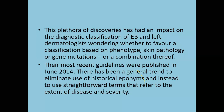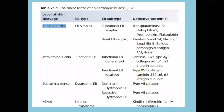The plethora of discoveries had an impact on the diagnostic classification of EB, leaving dermatologists wondering whether to favor a classification based on phenotype, skin pathology, gene mutation, or a combination thereof. The most recent guidelines were published in 2014, and there has been a general trend to eliminate the use of historical eponyms and instead use straightforward terms referring to the extent of disease and severity. Now the classification is simpler and more descriptive of the type of EB. There are three major types of EB, and the fourth is Kindler syndrome.